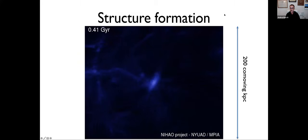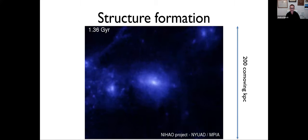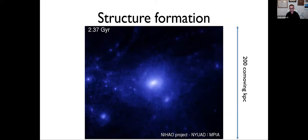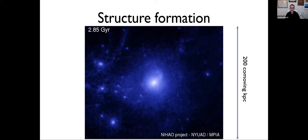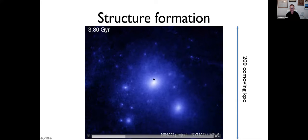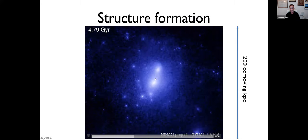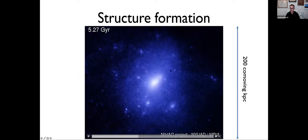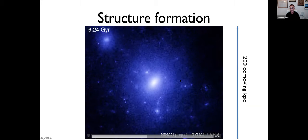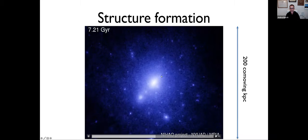We can trace structure formation very easily through numerical simulations or linear theory. Structure formation in a cold dark matter universe proceeds bottom-up: small objects form first and then merge into larger ones, creating what we call dark matter halos. At the center of a dark matter halo is where the galaxy sits. A typical dark matter halo for a galaxy like the Milky Way is roughly 200 kiloparsecs across.